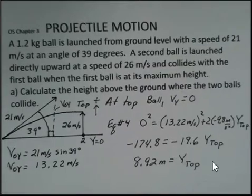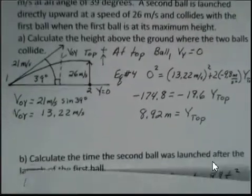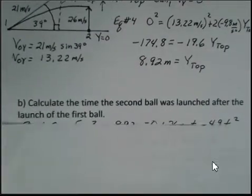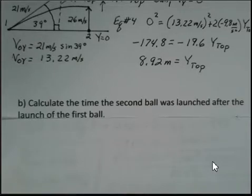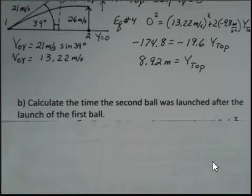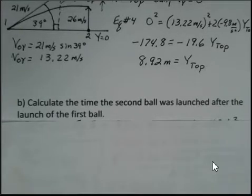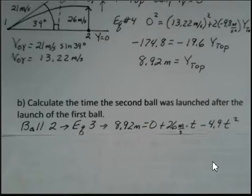So let's continue this problem. Calculate the time the second ball was launched after the launch of the first ball. So what's our time delay if we want ball two to hit ball number one at the maximum height position? Well, ball number two, I'm going to use equation number three. We're interested in a time value here. And in this problem for ball number two, we do not know the velocity at the top of the motion.